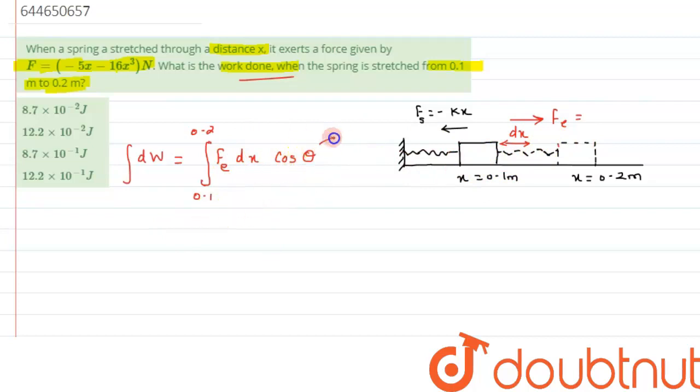So we will take θ to be as 0 degree. Therefore, what we are going to get is W equals integral of F_external dx from 0.1 to 0.2 meters.